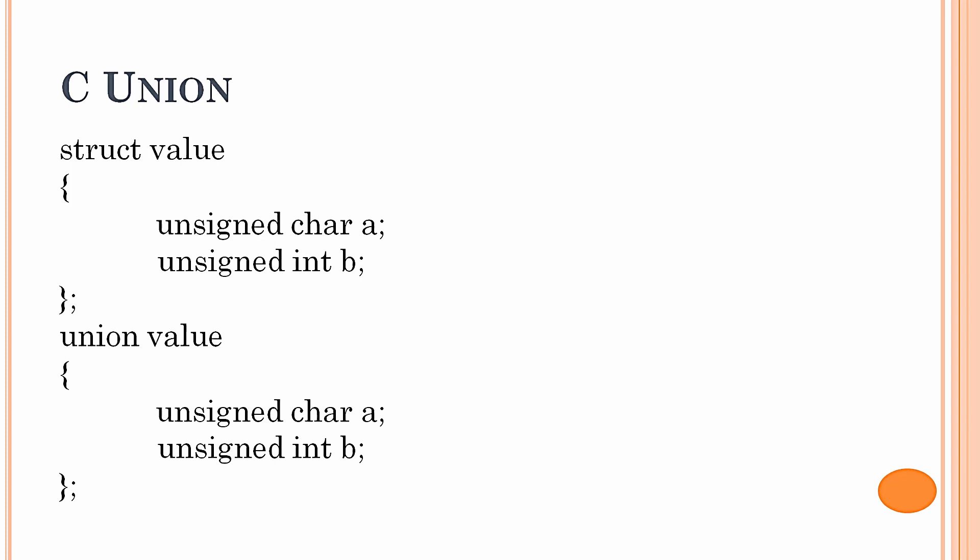You can see on the screen the declaration method for structure as well as union. Both have two elements: unsigned char a and unsigned int b. The major difference is that the first variable of the structure starts from a particular address, let's say 0x4000, and the next variable is at the next consequent address, say 0x402, but both elements inside the union start from the same base address.